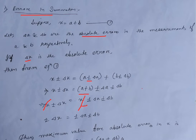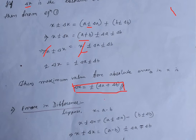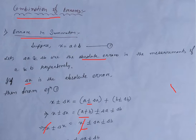After simplification, del x equals plus-minus del a plus-minus del b. The maximum value of the absolute error in the measurement of x is plus-minus (del a plus del b). So the maximum value of del x equals del a plus del b, and the minimum value of del x equals minus del a minus del b. Next is error in difference.